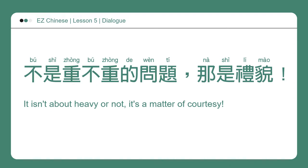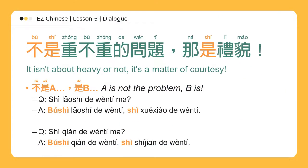不是重不重的问题，那是礼貌。It isn't about heavy or not — it's a matter of courtesy. 不是A，是B: A is not the problem, B is. It's not because of A, it's because of B. This can be applied to people, circumstances, times, things, or places.